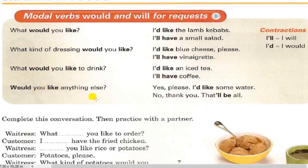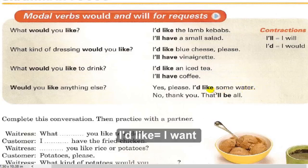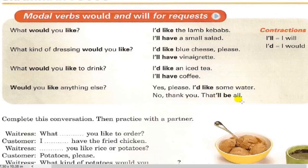Would you like anything else? Yes, please. I'd like some water. Note the pronunciation of 'water' — the T has a soft D sound, and the R is pronounced clearly. Would you like anything else? No, thank you. That'll be all. Notice 'that'll be all' — there's a schwa sound between 'be' and the vowel in 'all.'